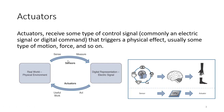Actuators receive some type of control signal, commonly an electrical signal or a digital command, that triggers a physical effect — usually some type of motion or force. In this diagram, the real-world physical environment is sensed by a sensor, digitally represented, and then acted upon by an actuator. For example, a temperature sensor measures temperature, it goes beyond a threshold, and turns on an air conditioner.